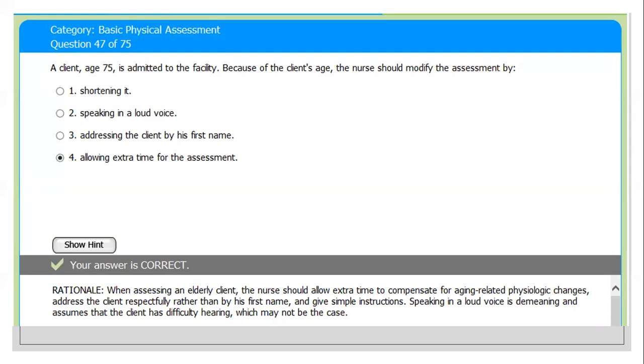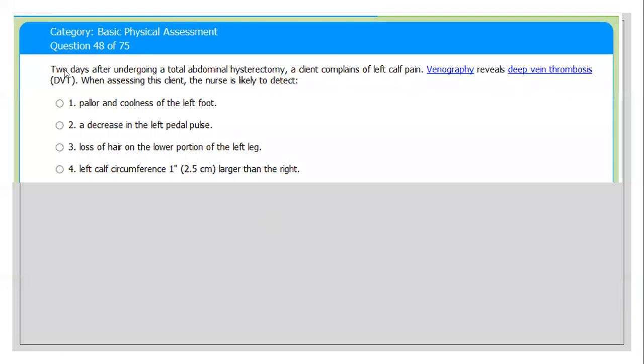You have to be patient. You have to be a good listener. Before assessment, make sure your patient is comfortable with you through therapeutic communication. The rationale states: when assessing an elderly client, the nurse should allow extra time to compensate for aging-related physiological changes and address the client respectfully rather than by first name. Also give simple instructions, simple, not complicated. Speaking in a loud voice is demeaning or assumes the client has difficulties hearing, which may not be the case.